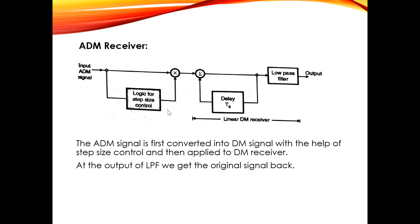For the ADM receiver: looking at the right-hand side of the block diagram, we can see it is essentially a linear delta modulator receiver. The ADM signal is first converted into a DM signal with the help of the logic for step size control block, and then it is applied to a standard DM receiver. We already know the working of a DM receiver. The only additional step is to convert the ADM signal into a delta modulator signal, then apply it to the DM receiver. At the output of the low-pass filter, we get the original signal back.